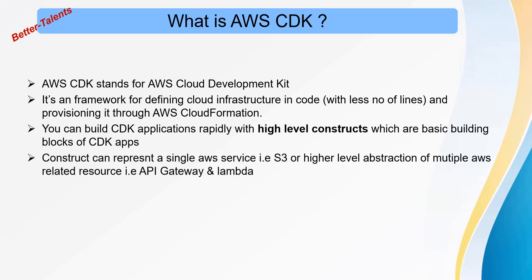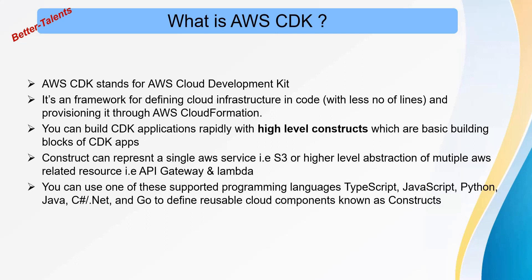A construct can represent a single AWS service such as S3, or it could be a higher-level abstraction of multiple related AWS services — for example, API Gateway and Lambda can together represent one construct. It's up to you how you assemble your constructs.